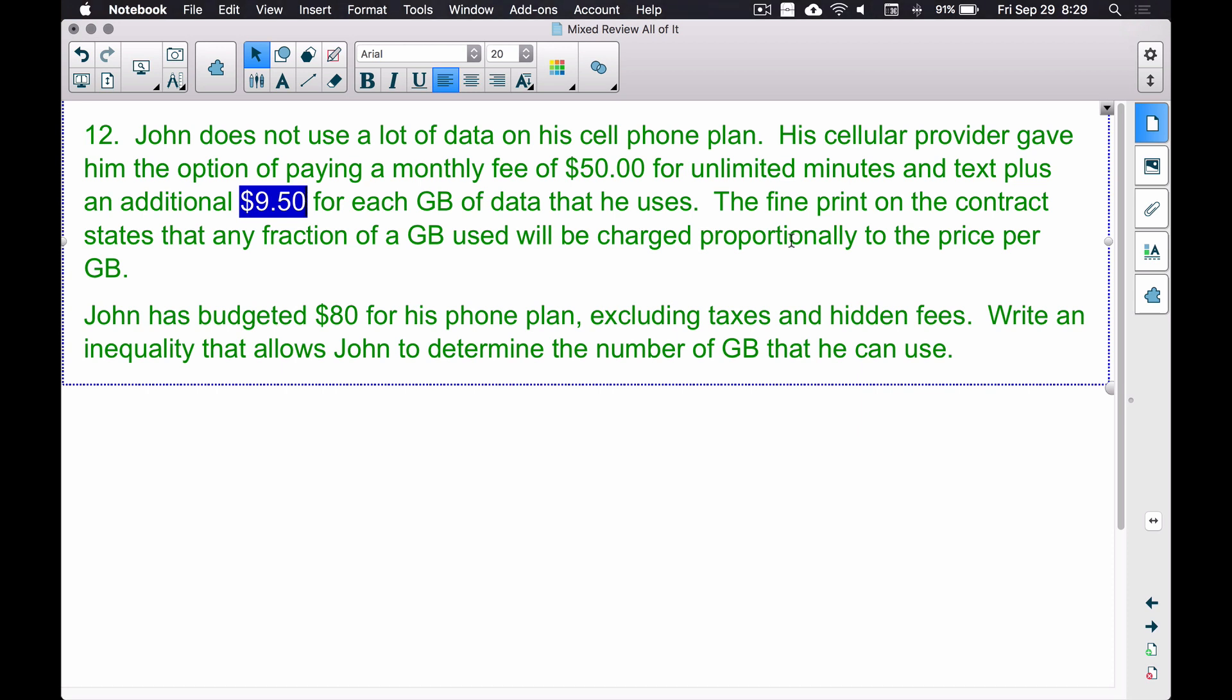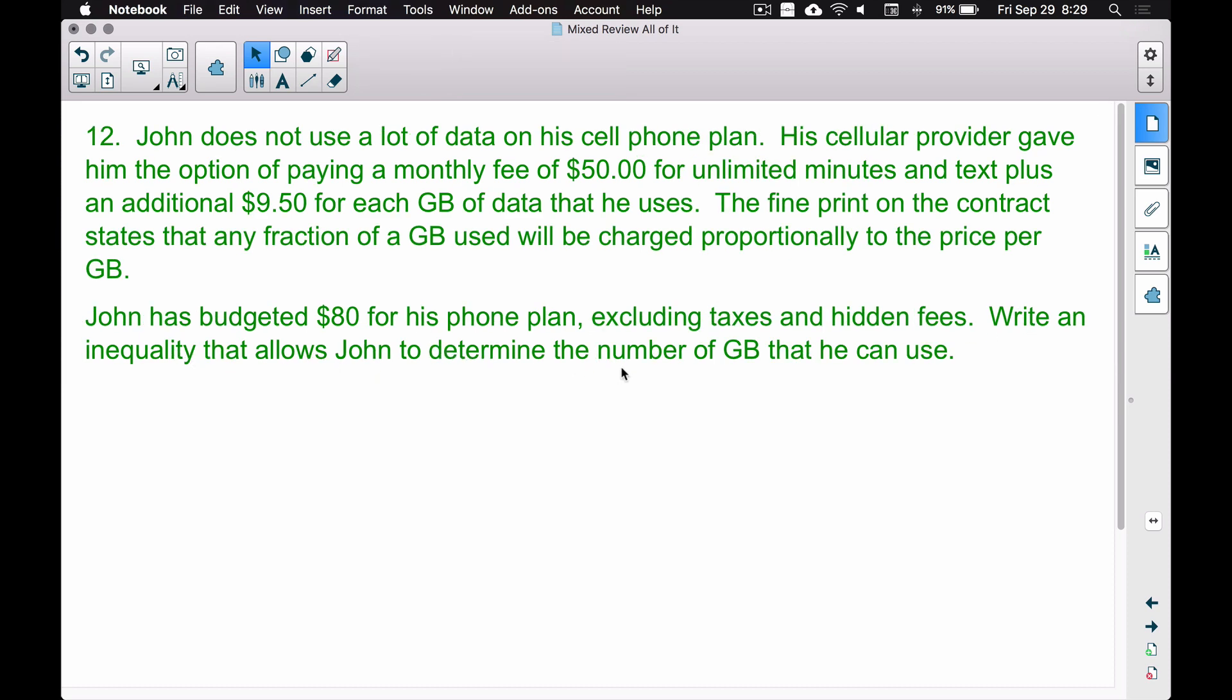John has budgeted $80 for his phone plan, excluding taxes and hidden fees. Write an inequality that allows John to determine the number of gigabytes that he can use. An inequality - why are we going to use an inequality here? John has budgeted $80 for his phone plan, so as long as he stays at $80 or less. An inequality is going to be these little symbols: less than, greater than, less than or equal to, or greater than or equal to. Since budgeting, anytime you budget, as long as you stay at that number or below it, then you've done what you wanted to do.